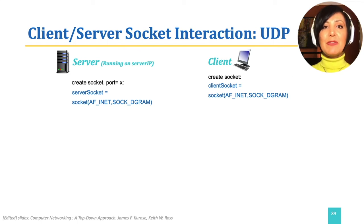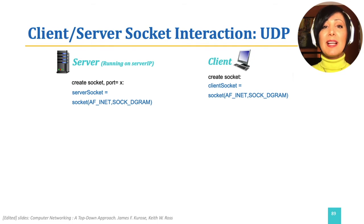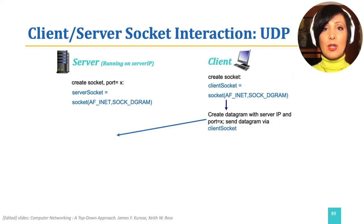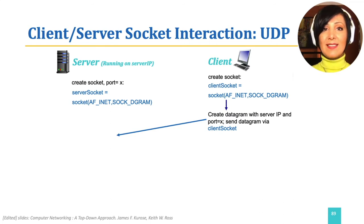The flow of communication between client and server in this simple example program would be as follows. Each of the client and server programs creates their own sockets. The client program creates a datagram with the server IP and port number and sends the datagram using the client socket. The server program then receives the incoming packet on its socket.